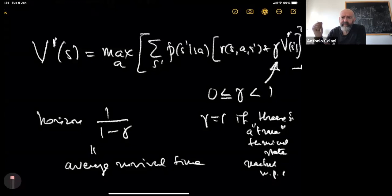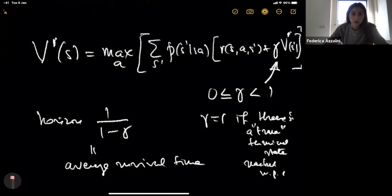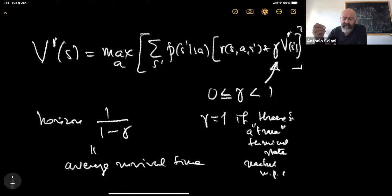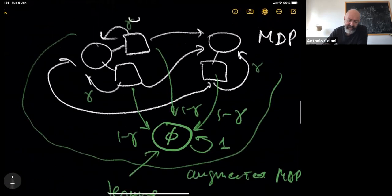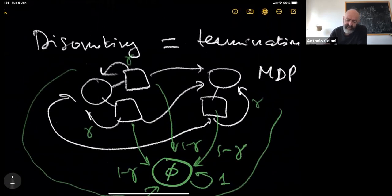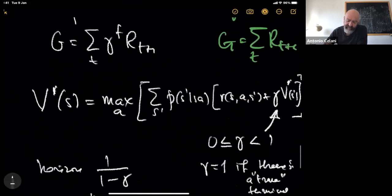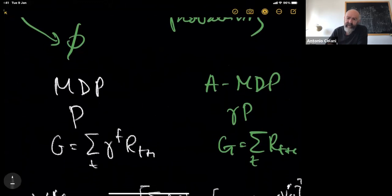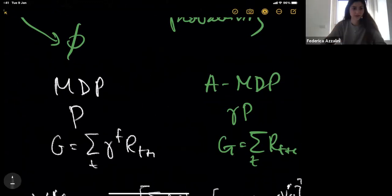Any questions so far? A question about gamma equals one: if in the original MDP — not the augmented one — there was really a terminal state, then you could set gamma equal to one because this sum will converge anyway, since eventually these rewards become zero all the time. Your objective here converges with gamma equals one if eventually the rewards become zero. Yes, that is correct.